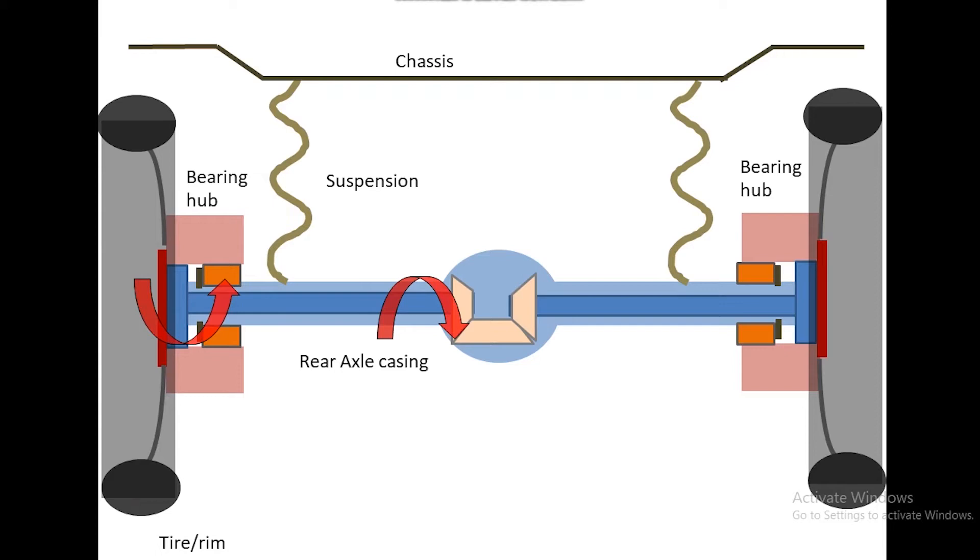Stub axle which transmits only torque from differential sun gear to the wheel or bearing hub. Therefore it undergoes only torsion.